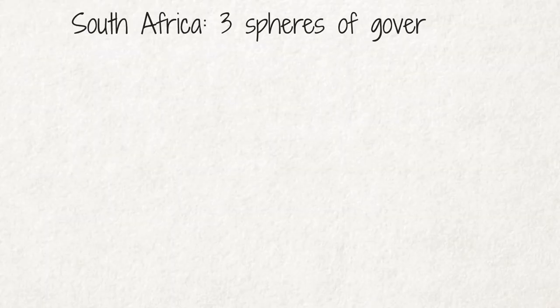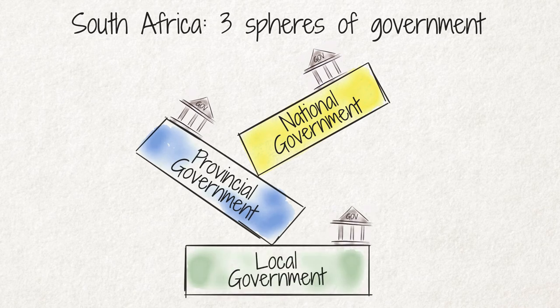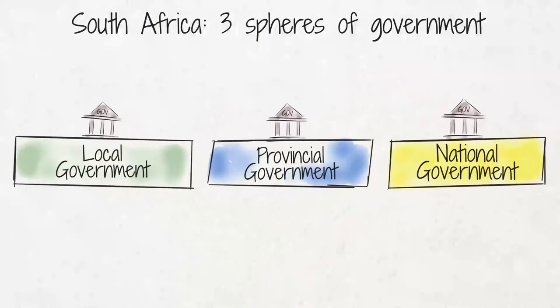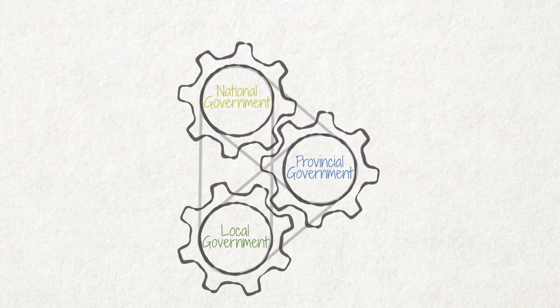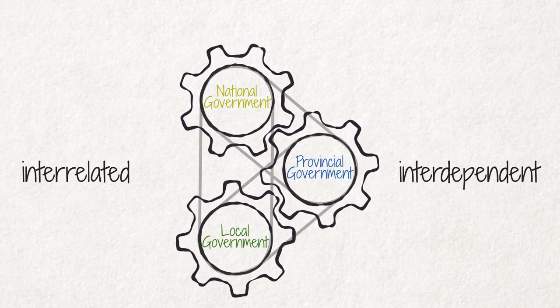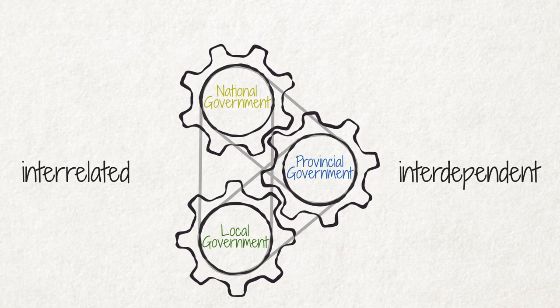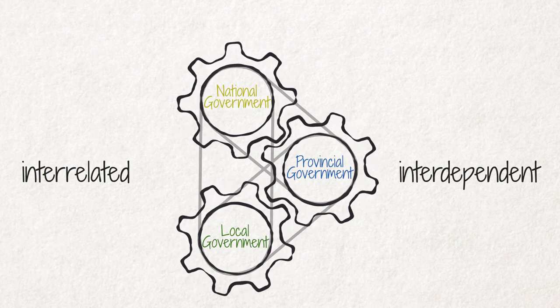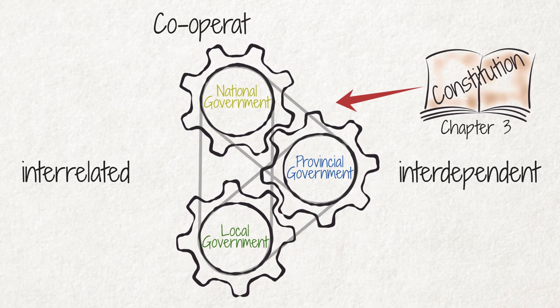In South Africa, we have three spheres of government: the national, provincial, and local spheres of government. Each sphere has its own powers and operates separately. However, the three spheres are interrelated and interdependent and are all equally important to ensuring that the country is well governed. The three spheres of government are entrenched in our Constitution in Chapter 3, titled Cooperative Government.